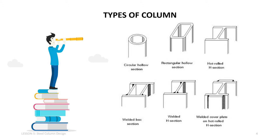Steel hollow sections are versatile materials used in commercial, industrial and residential constructions to provide structural support and aesthetic appeal. These hollow steel sections come in either circular, square, or rectangular shaped cross-sections that possess their own unique properties.